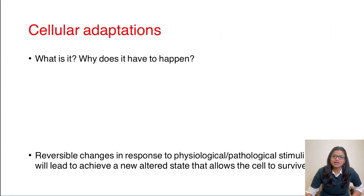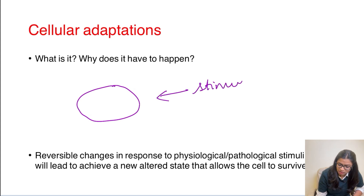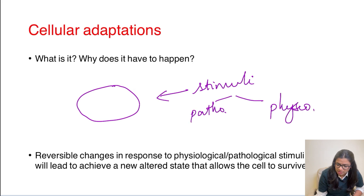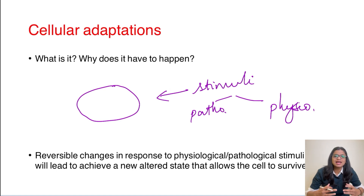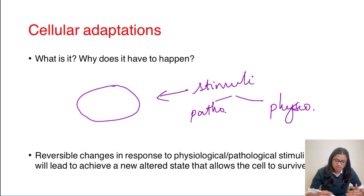What are these cellular adaptations and why does it even have to happen? Suppose this is a normal cell and I am giving it some stimuli, which could be either a pathological or a physiological stimuli. When the stimuli is given, the normal state of the cell has been disturbed. Now the cell has to undergo certain changes in itself so that it can adapt and survive in the new environment created by this stimuli. These changes are termed as cellular adaptations.